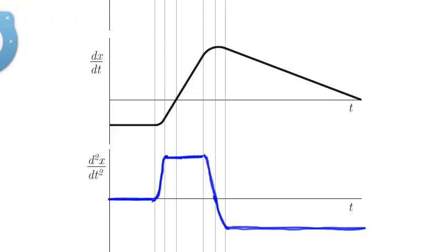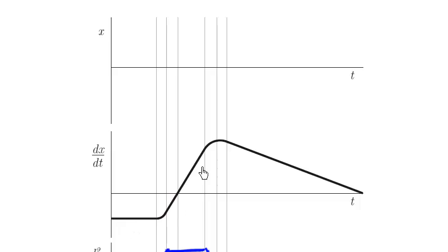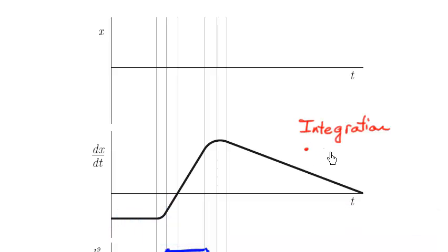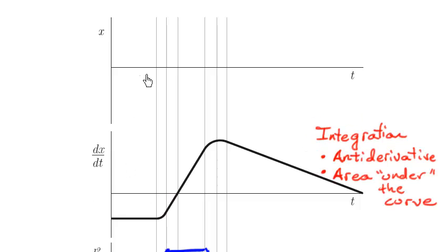Now in order to draw this other graph, we're going to do sort of the opposite: we start with the function which is a derivative and get the original function itself whose derivative is this thing — so we have to go backwards. Going back to what the integral means: first, integration is an anti-derivative, the opposite of a derivative — it does the opposite of what the derivative does. And secondly, the integral can be thought of as an area under the curve. When you draw these integral graphs, you have to give it an initial condition. Let's say x at time zero equals zero, so we start at this point right there.